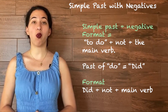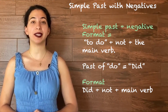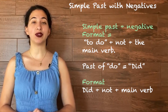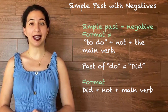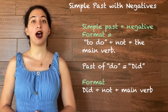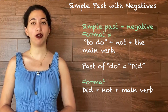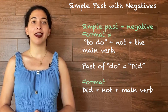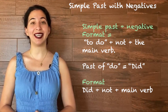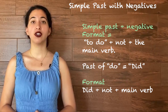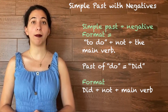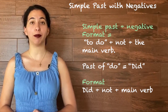When we want to use negatives with simple past, we use the past tense of the verb 'to do' plus 'not' plus the main verb. The past tense of the verb 'to do' is 'did.' So our format is: did + not + the main verb.